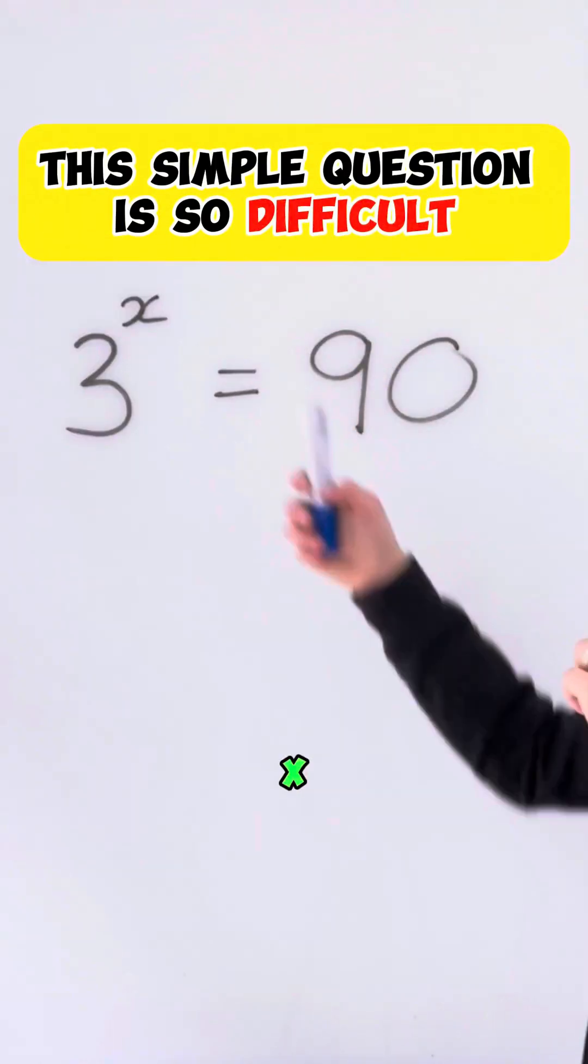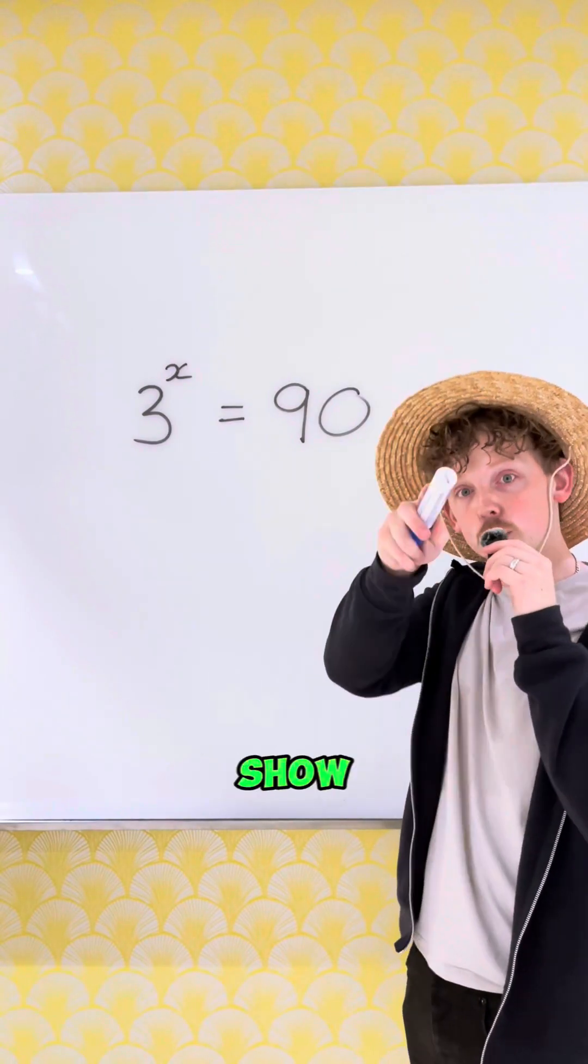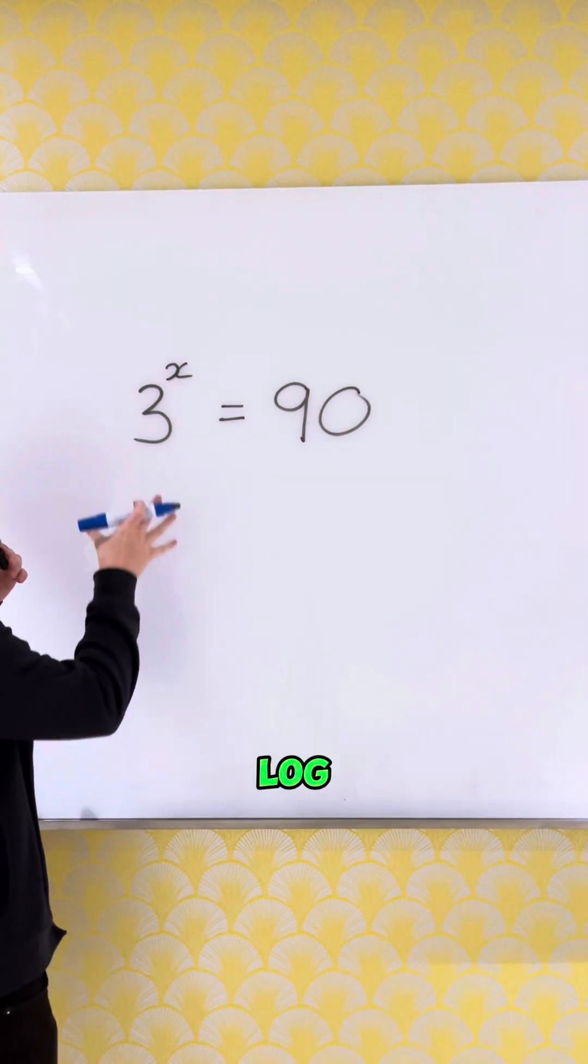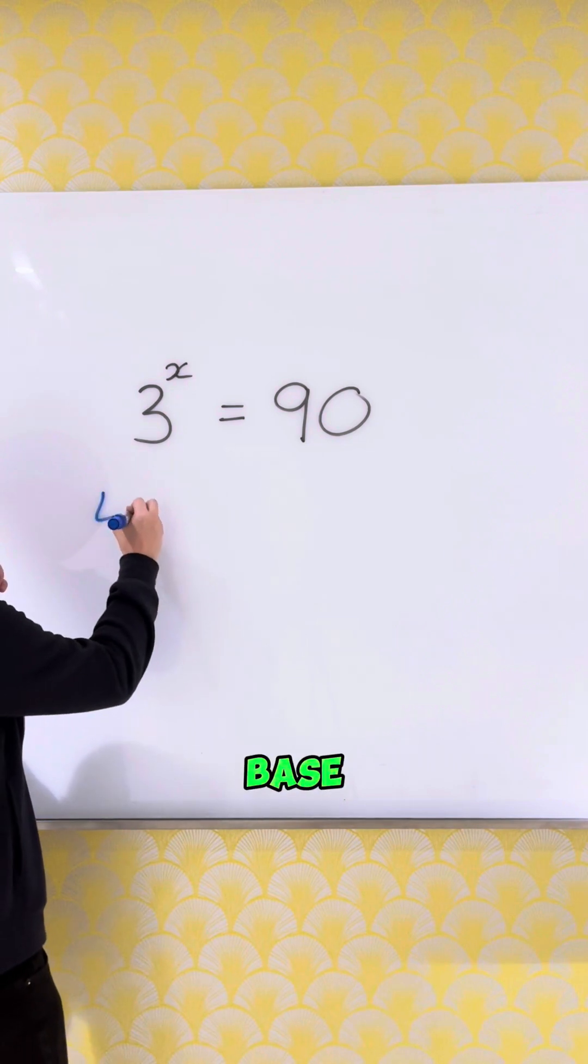Did you think that x was 30? You're wrong, and I'll show you a way. To do this, I'm going to apply a log to both sides, a log of base 3.